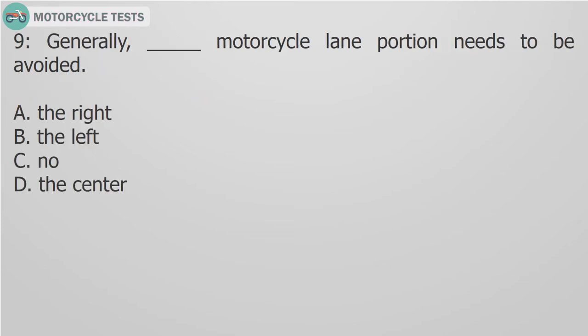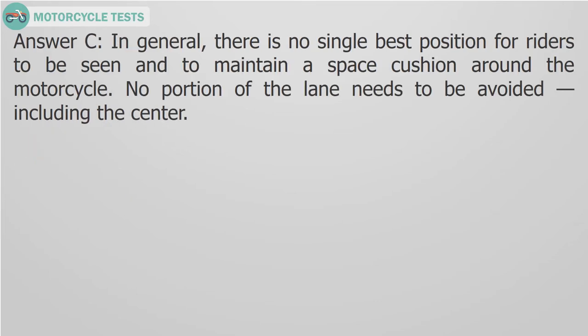Question 9. Generally, fill in the blank — which motorcycle lane portion needs to be avoided? A. The right. B. The left. C. No portion. D. The center. Answer C. In general, there is no single best position for riders to be seen and to maintain a space cushion around the motorcycle. No portion of the lane needs to be avoided, including the center.